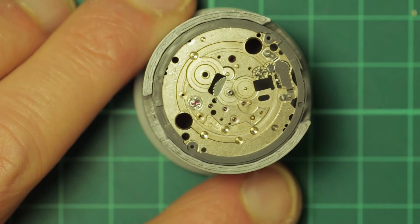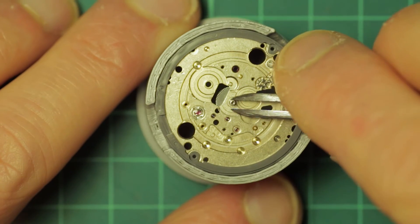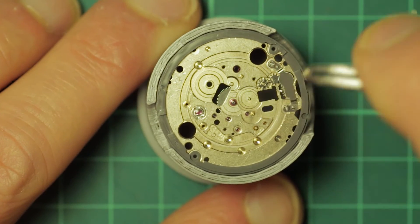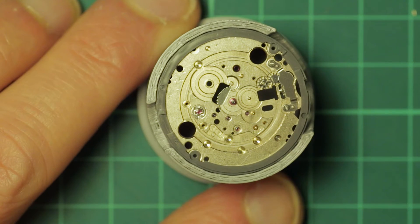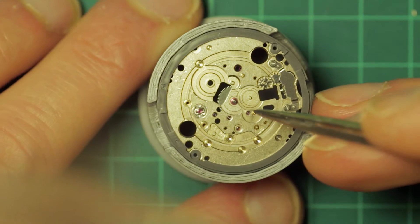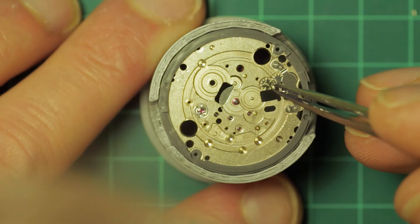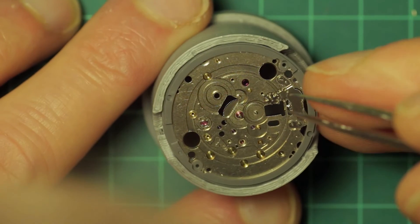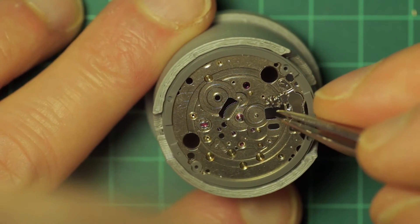Then the cannon pinion is removed. And you can see there that the centre wheel is actually firmly glued in place with lubrication. As I say, this was a brand new movement and it was acquired in a lot.